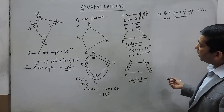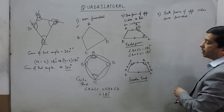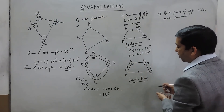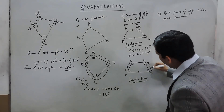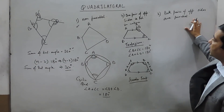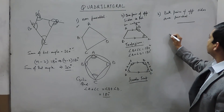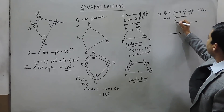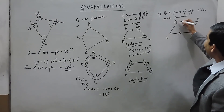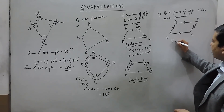In an isosceles trapezium, the angles at the base are also equal — angle A equals angle B and angle C equals angle D — while the sum of angles on each parallel side remains 180 degrees. Moving to the third classification, when both pairs of opposite sides are parallel: line AB is parallel to CD, and line DA is parallel to BC. This figure is known as a parallelogram.